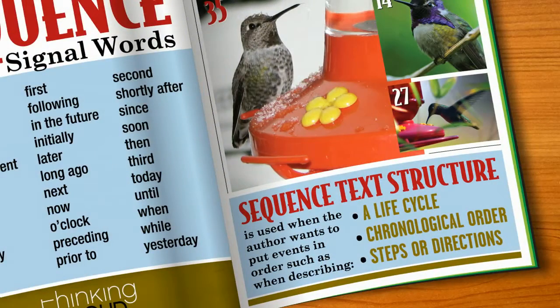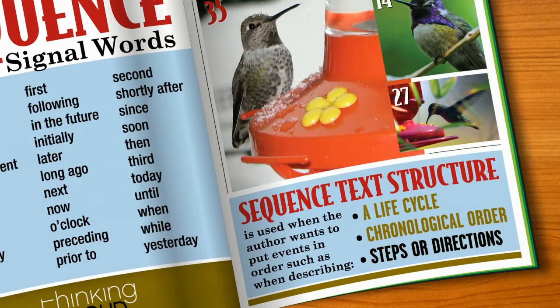As you know, authors select text structures for their writing depending on which will best convey the information they want to get across to their readers. Sequence text structure is used when the author wants to put events in order, such as describing a life cycle, telling about something in chronological order, or providing a set of steps or directions.